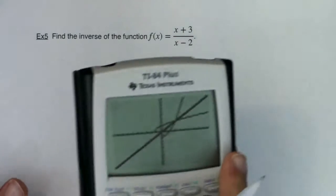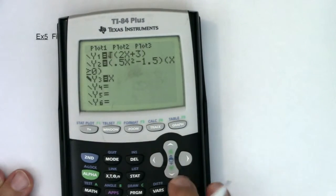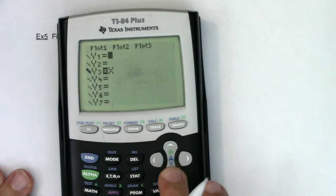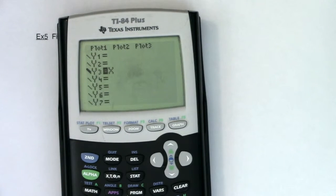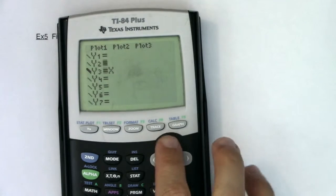The first thing I want to do, let me clear out the stuff I had before. I'll just turn this off right now. If you ever hover over the equal sign and hit enter, you can turn a function off.